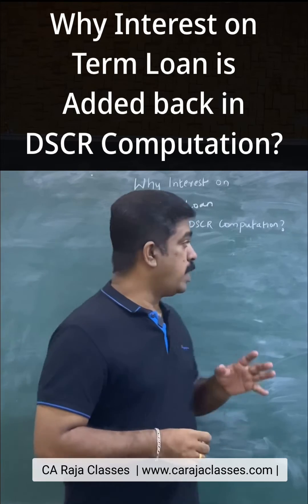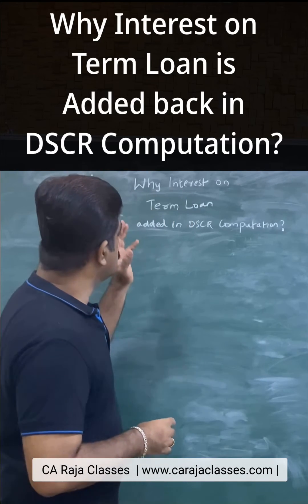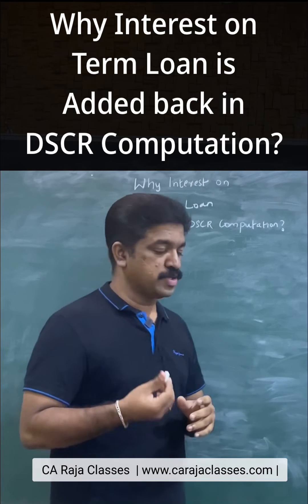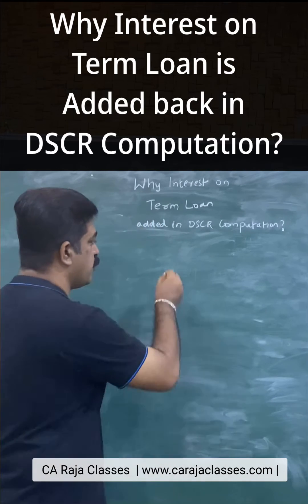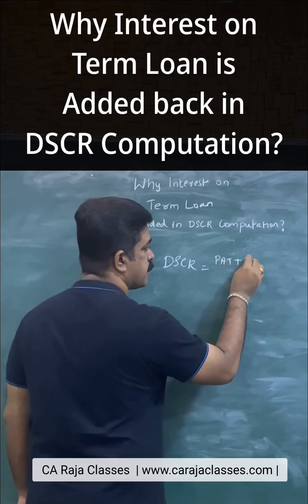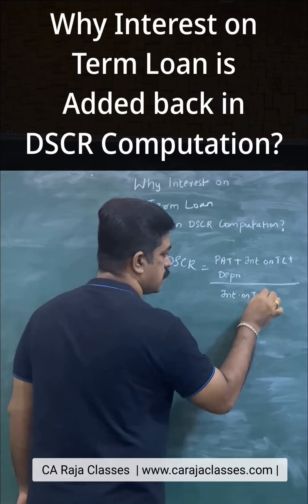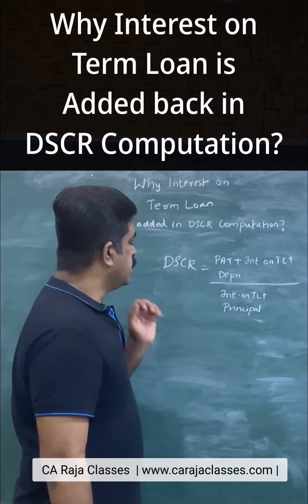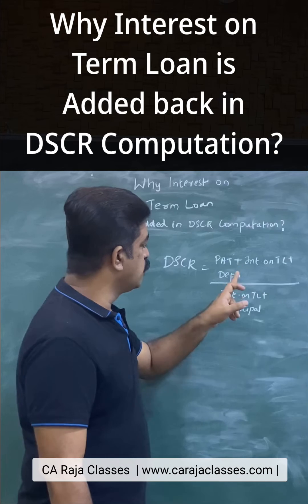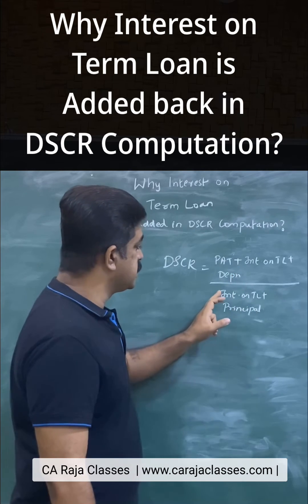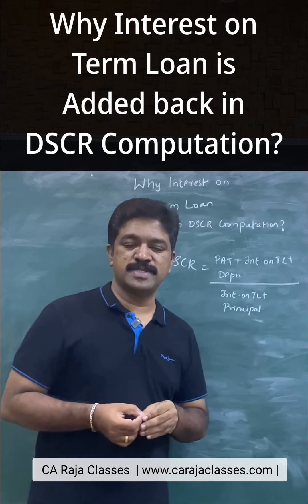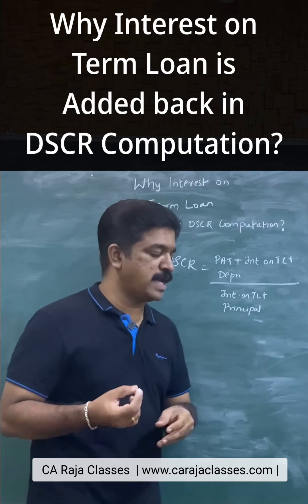I keep getting this query: why is interest on term loan added in DSCR computation? In the DSCR formula, the numerator has PAT plus interest on term loan plus depreciation, and the denominator has interest on term loan plus principal. So why is this interest on term loan added back?